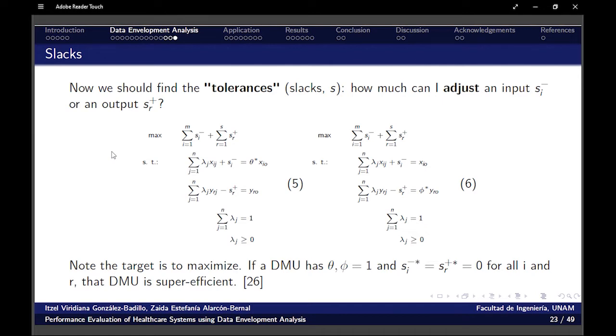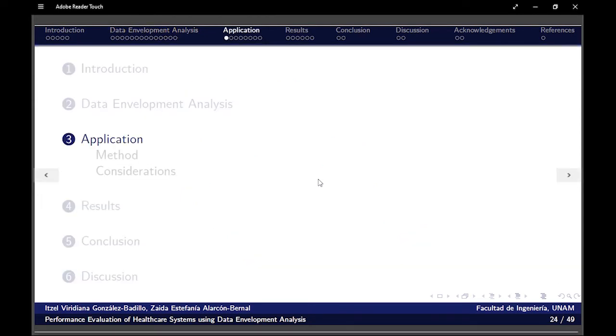Note that the input has this notation with the minus sign and the output with this plus. And the target of both models for input and output orientations is to maximize this value. So here, the thing is that if the efficiency is equal to one, and the slacks found are equal to zero, then that DMU is super-efficient.